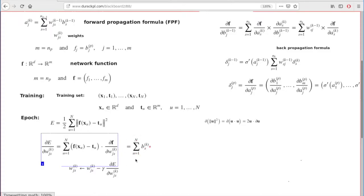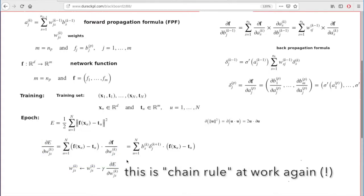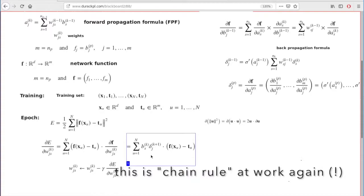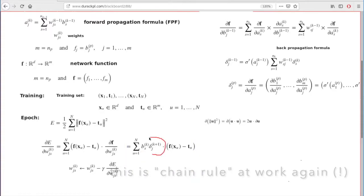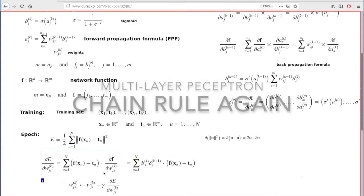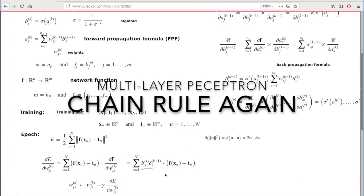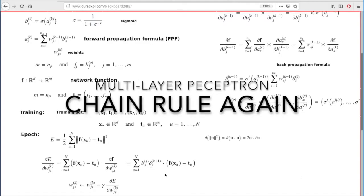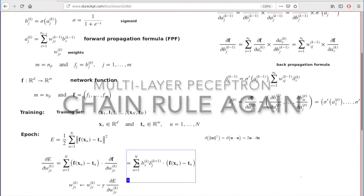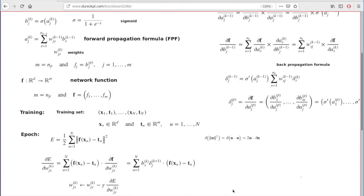When you differentiate your network function with respect to weight at the kj neuron, the result of this differentiation will be this factor. To understand why this derivative equals these two factors, we need to understand how the minor perturbation to this weight propagates through the network. I summarize this in the following diagram.